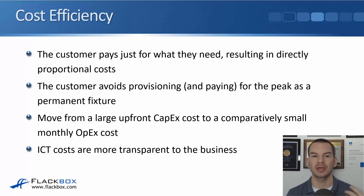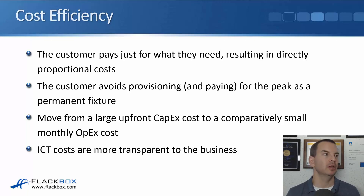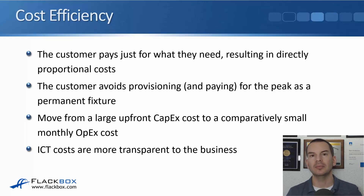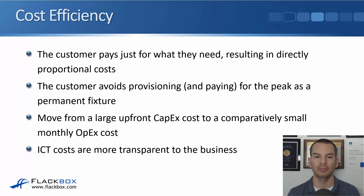The next advantage is cost efficiency. As a customer, you pay just for what you need right now, resulting in directly proportional costs. You don't have to over-provision and pay for extra capacity you're no longer using. Consider an e-commerce application — they're busier at Christmas. With an on-premises solution, you'd need enough hardware to support your busiest time of year, but that extra capacity sits wasted the rest of the year. With cloud, you move from that large upfront capex cost to a comparatively small and more manageable monthly opex cost.